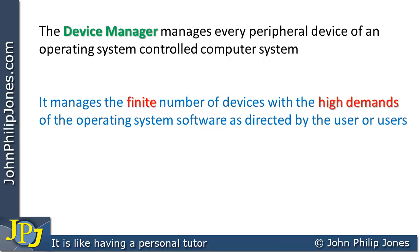Let's take an example where we have a computer system and there are a few individuals connected to it via various terminals. They all at the same time click on the print icon for the documents they're working on. There could only be one printer available to all of those individuals. So we have a finite printer — one in this particular case — under quite high demand from all of these users.